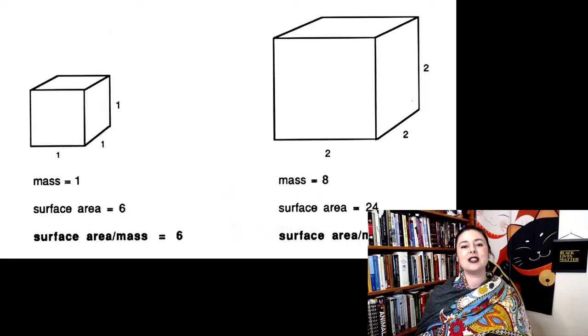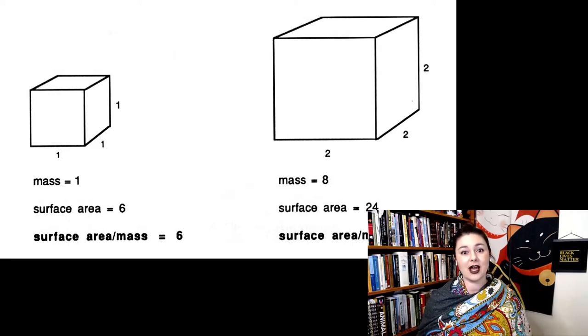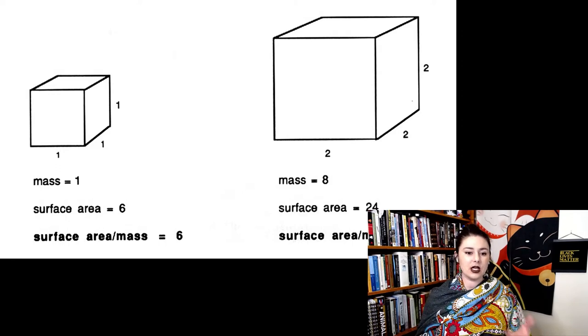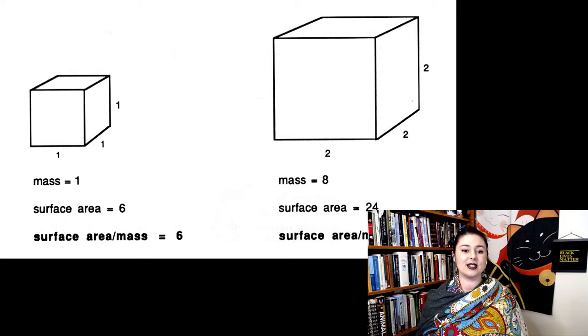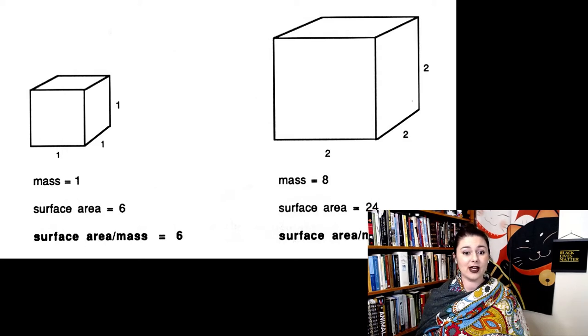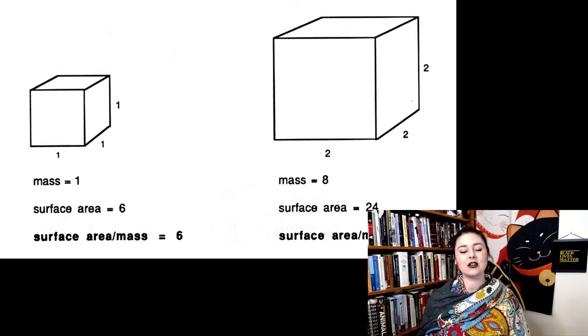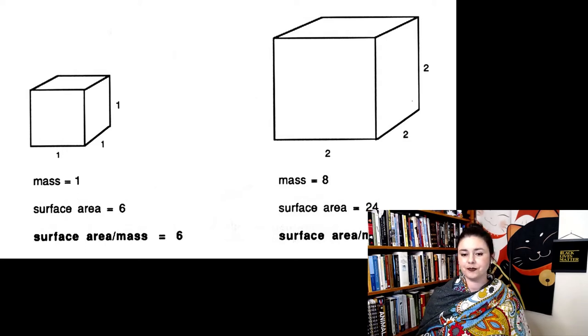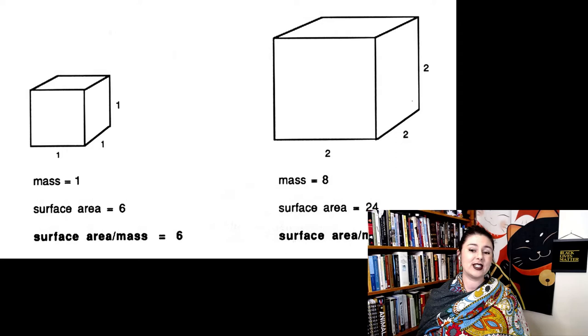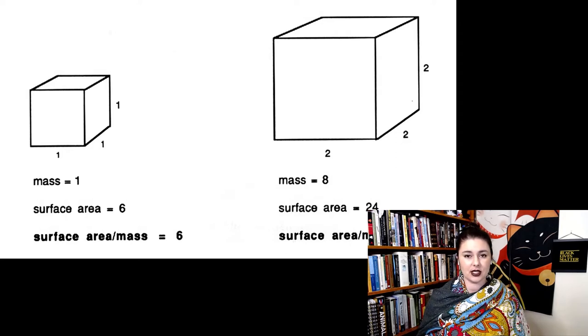What's going on here is the difference between surface area and mass. In our smaller cube that has a size of 1, the mass is 1, but our surface area is 6. So if we divide the surface area by the mass, we get a ratio of 6. Now, if we simply double the lengths of our cube,